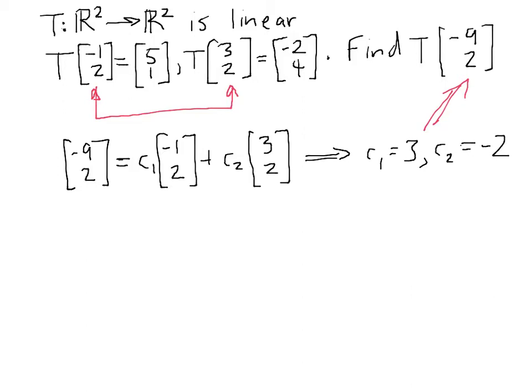So now that we know that, [-9, 2] is equal to 3 times [-1, 2] plus -2 times [3, 2]. So we can use that fact along with the linearity of T in order to find T of [-9, 2].